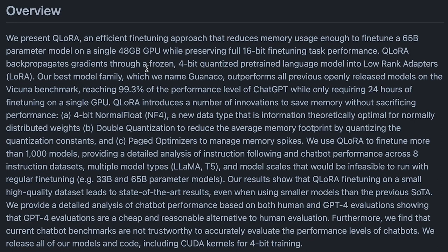We're not going to do a 65 billion parameter model because I don't even have a 48 gig GPU. What we are going to do is take a 20 billion parameter model, which is the GPT-NeoX 20 billion model, and run that on a Google Colab machine so it should fit and run purely within the GPU. It preserves full 16-bit fine-tuning task performance, but does it via 4-bit quantized pre-training, which means you're taking a very large model and cutting it down to a much smaller size — 16 bits down to 4 bits — but without losing the performance.